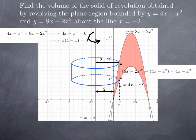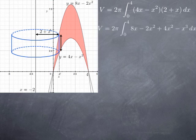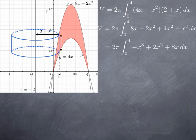The two curves are equal when 4x minus x squared equals 0, in other words where x equals 0 or x equals 4. So our volume is 2π times the integral from 0 to 4 of the height 4x minus x squared multiplied by the radius 2 plus x. Multiplying things through, we get 8x minus 2x squared plus 4x squared minus x cubed. Simplifying, we end up with 2π times the integral from 0 to 4 of negative x cubed plus 2x squared plus 8x.